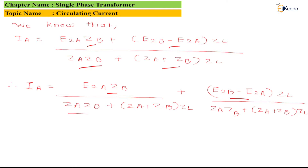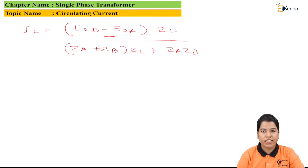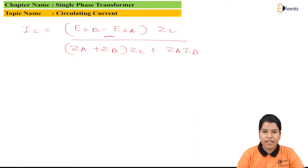In this equation, the second term is called the circulating current. Hence the formula for circulating current is: IC = (E2B − E2A) × ZL / (ZA × ZB + ZA × ZB).